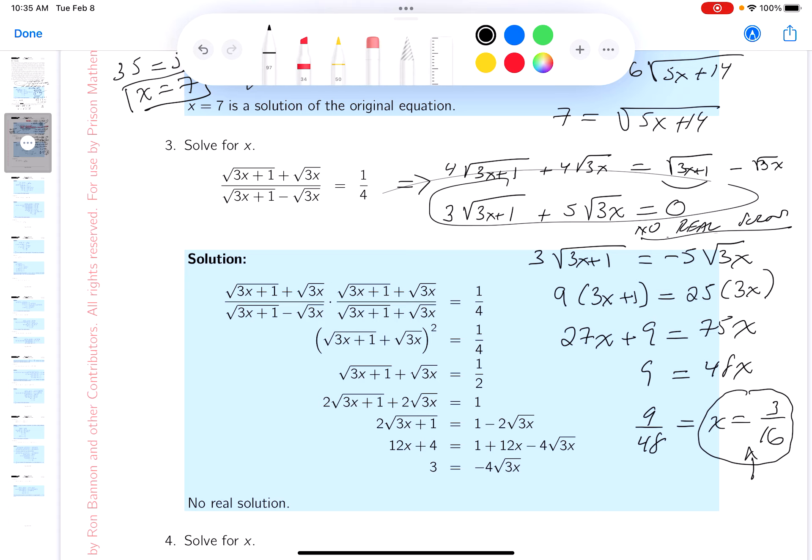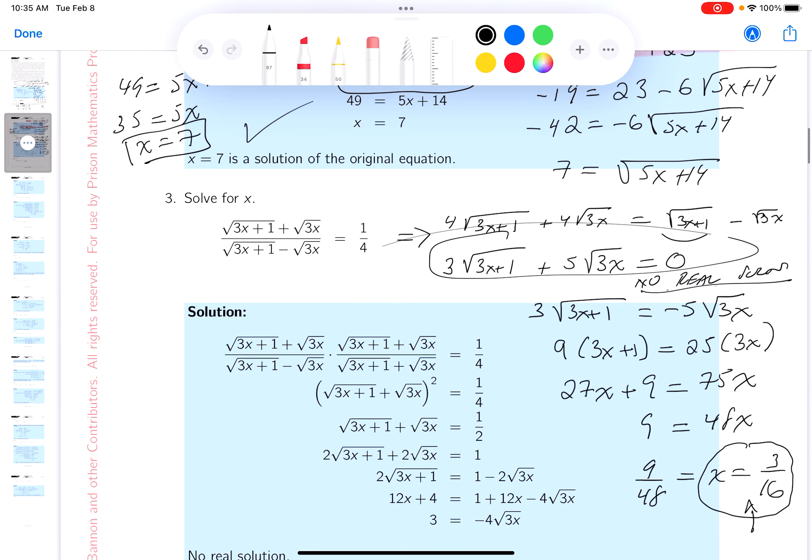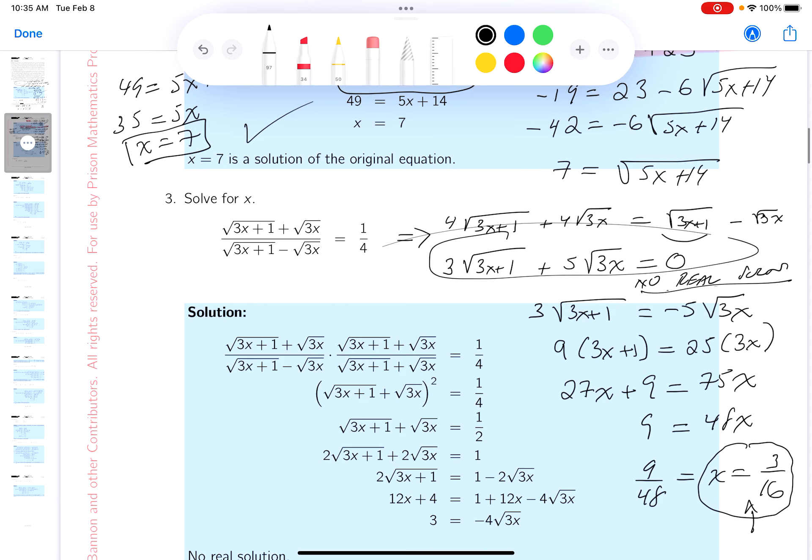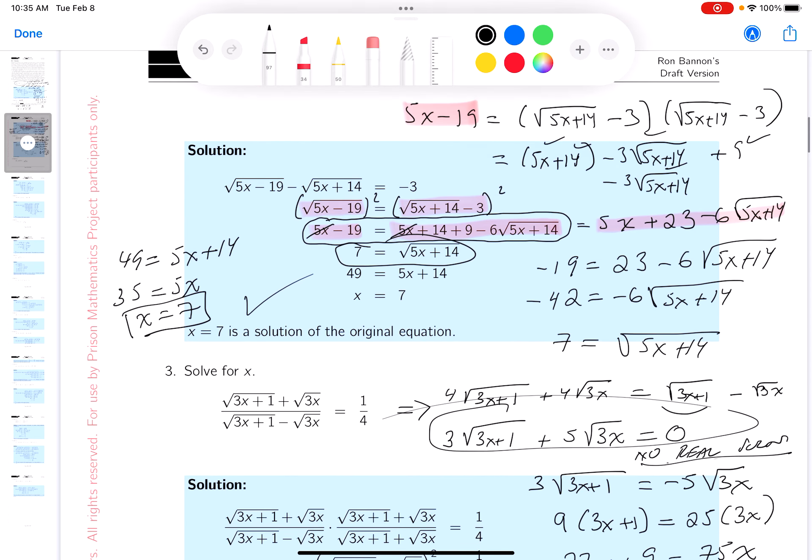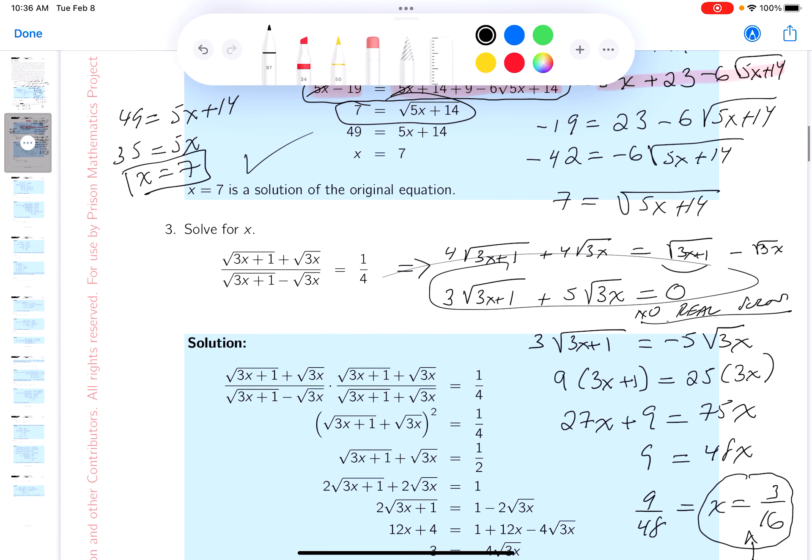And the problem with checking it, after all that work, it's going to be difficult to check. But I do have to do this. I have to do 3 times 3 16ths. I got 3x plus 1. And if x is equal to 3 16ths, that would be 9 16ths plus 16 16ths, which would be 25 16ths. So what would you get over here? Well, if I just check it, 25 16ths, the square root of that would be 5 quarters. 5 quarters here, too. I'm just checking.